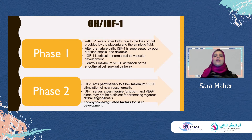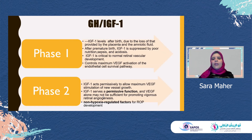However, in phase two, the levels of endothelial IGF-1 start to increase, acting as a permissive function when it reaches the threshold level. It results in vigorous activation of vascular endothelial growth factor, resulting in retinal angiogenesis and neovascularization, and is considered a non-hypoxia-regulated factor for ROP development.